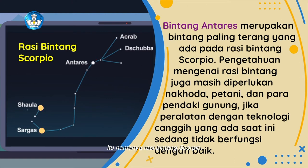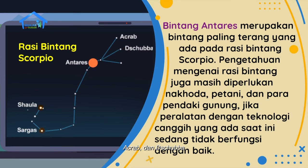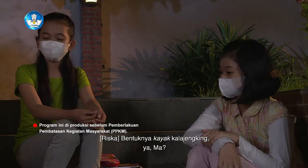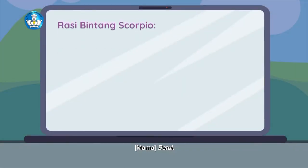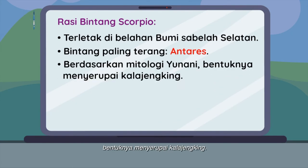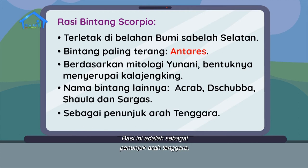Itu namanya Rasi Bintang Scorpio yang terletak di belahan bumi selatan seperti di Indonesia. Rasi Bintang Scorpio terbentuk dari bintang Saula, Sargas, Antares, Akrab, dan Deskuba. Bintang yang paling terang di Rasi ini adalah Antares. Bentuknya seperti kalajengking. Berdasarkan mitologi Yunani, bentuknya memang menyerupai kalajengking. Rasi ini adalah sebagai penunjuk arah Tenggara.